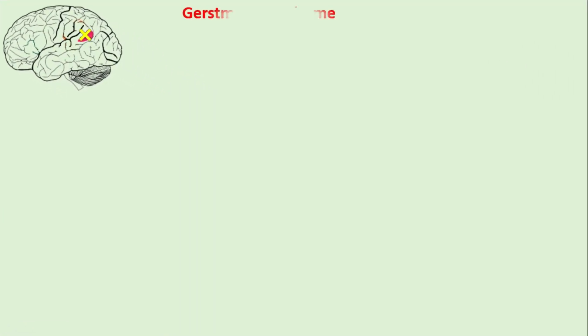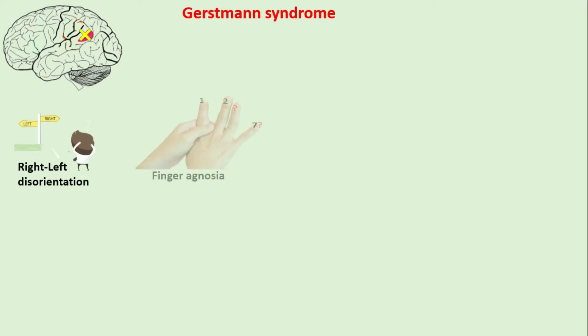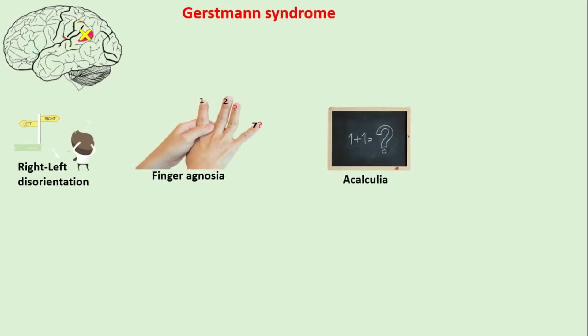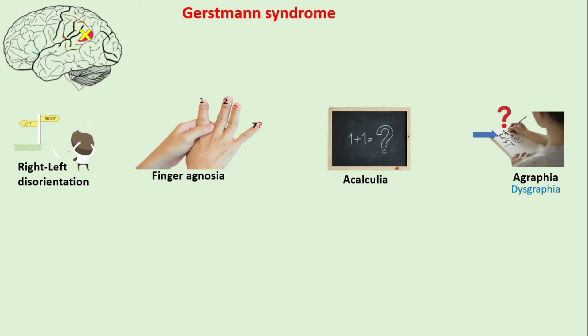Gerstmann syndrome is characterized by right-left confusion. The patient is unable to identify their own fingers and cannot perform simple mathematical calculations. The patient is also unable to write, and impaired handwriting is observed.